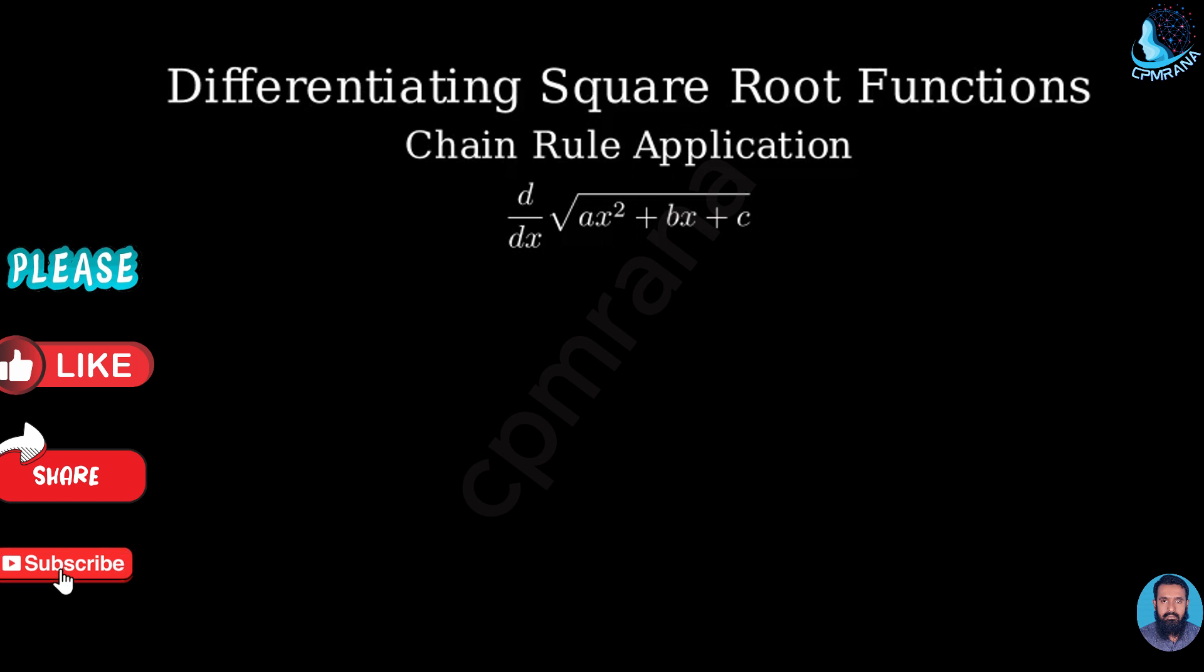To solve this, we'll use the chain rule. The chain rule states that when we have a composite function, we multiply the derivative of the outer function by the derivative of the inner function.